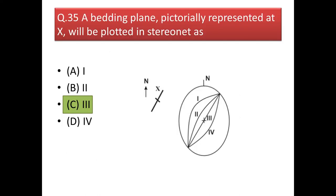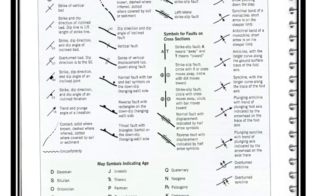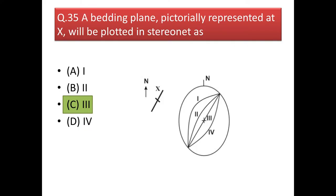Next question: a bedding plane pictorially represented at X will be plotted in the stereonet as? From the figure, X is a vertical bed with a dip of 90 degrees, and it can be plotted as line 3 — because line 3 represents a bed with a dip of 90 degrees.